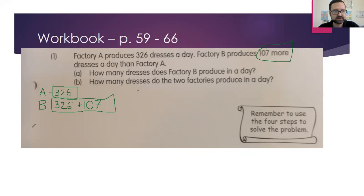Part A here says how many dresses does Factory B produce in a day. Now I'm just going to do 326 plus 107. And let's see what the answer is here. 6 and 7 is 13, carry the 1. 2 plus 1 is 3, 3 and 3 plus 1 is 4. So we have a grand total of 433 dresses.